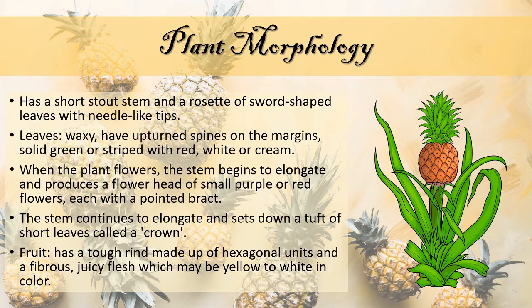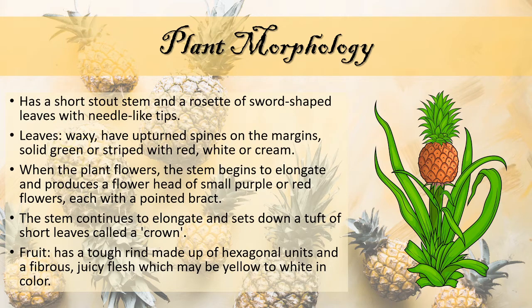When the plant flowers, the stem begins to elongate and produces a flower head of small purple or red flowers, each with a pointed bract. The stem then continues to elongate and sets down a tuft of short leaves called a crown. The individual fruits develop from the flowers and fuse to form one large cylindrical fruit unit topped by the crown.